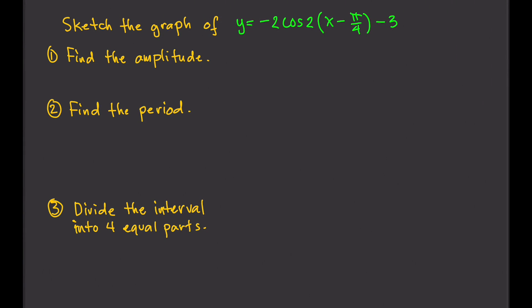Sketch the graph of y equals negative 2 cosine of 2 times x minus pi over 4, minus 3. This is a cosine function. First, find the amplitude. The amplitude is the absolute value of the number in front of cosine, so that's the absolute value of negative 2, which is 2. That's the amplitude.